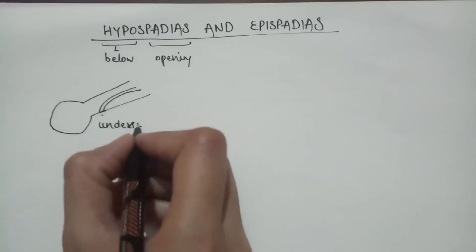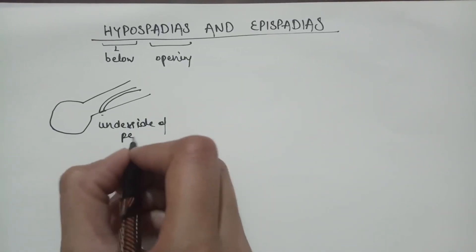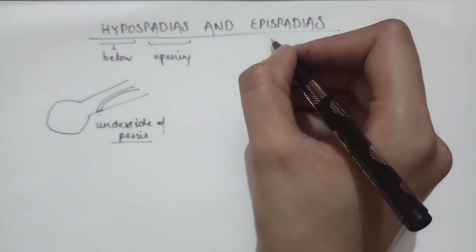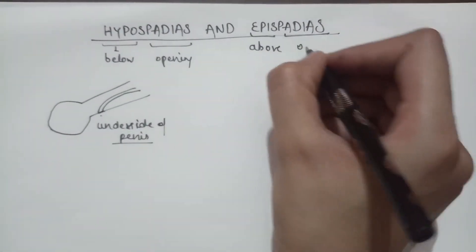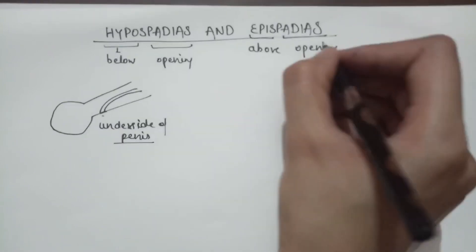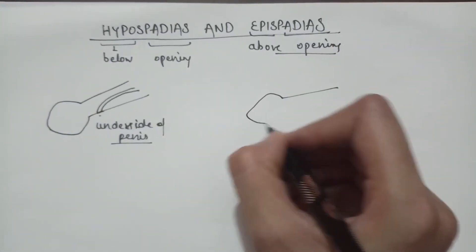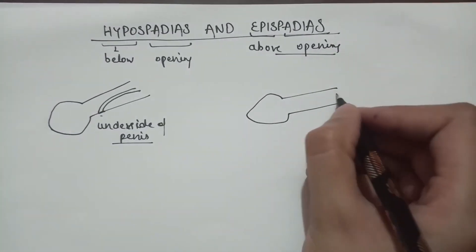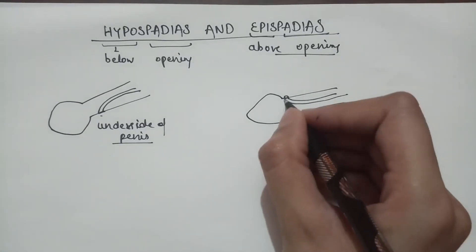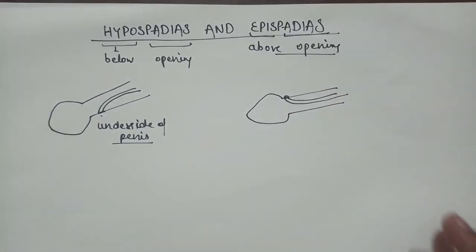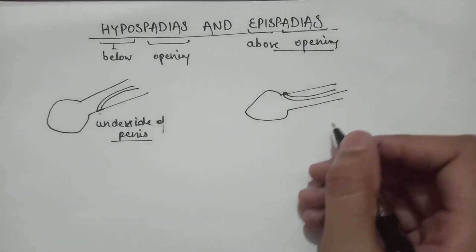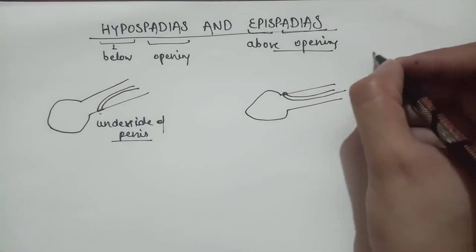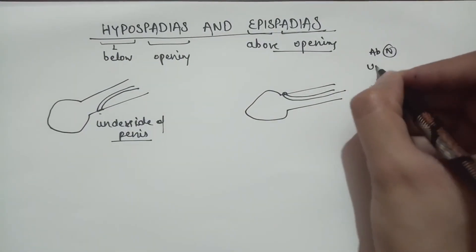In epispadias, epi means above and spadia means opening. The urethra is opening on the above surface of the penis — an abnormal urethral opening is present.